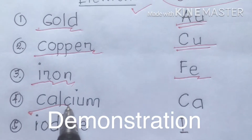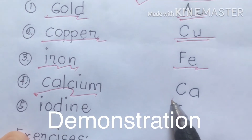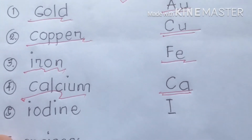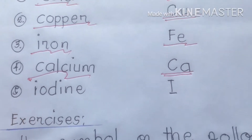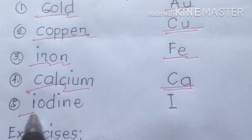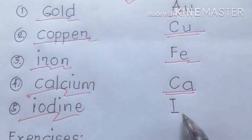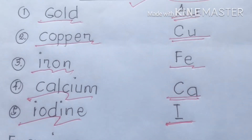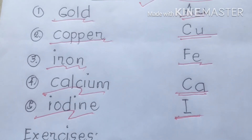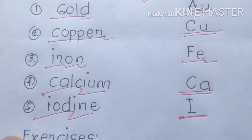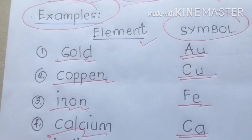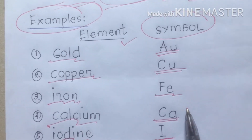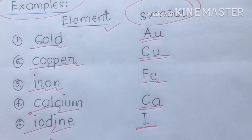Next is calcium. The symbol is Ca. That's the symbol for calcium. Then iodine — the symbol is uppercase I. So these are the following examples of elements and their symbols for chemical elements.